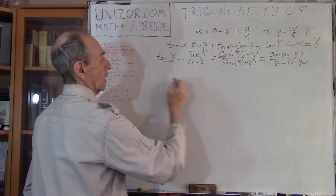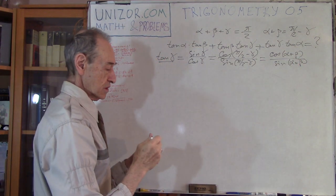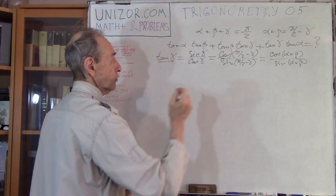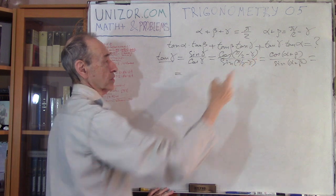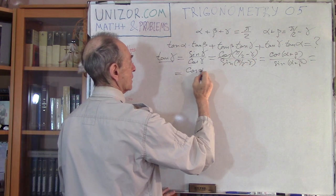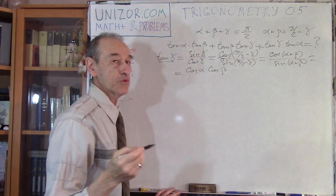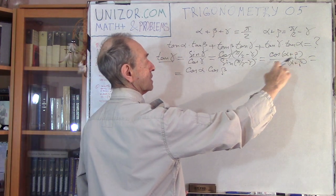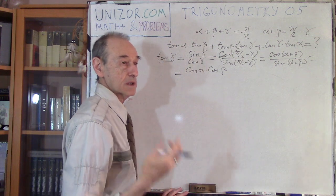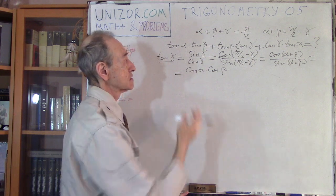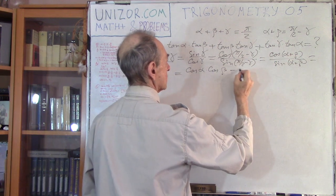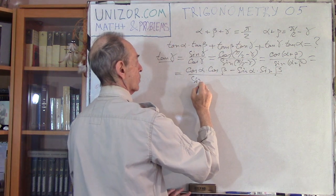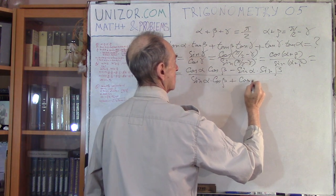Using this, I can substitute and my expression, which contains three angles, will have only two variables: alpha and beta. Before doing that, I'll open up what the cosine and sine of sum of angles are. Cosine of alpha plus beta is cosine alpha times cosine beta minus sine alpha times sine beta — that's one of the formulas I remember. Divided by sine: it's sine cosine plus cosine sine.